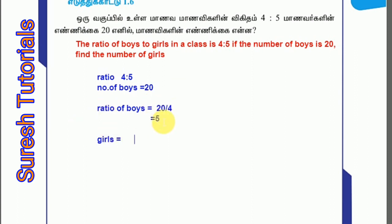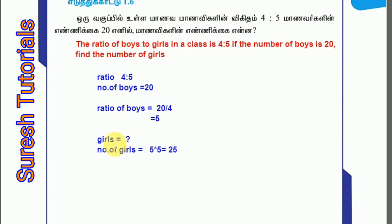So then we will get to the girls. Boys are 5 and girls are 5. Girls are 3. Ratio of girls. Girls are 5. Boys are 5. Girls are 25. So we are going to find the number of girls. Number of girls equals 5 times 5 equals 25.